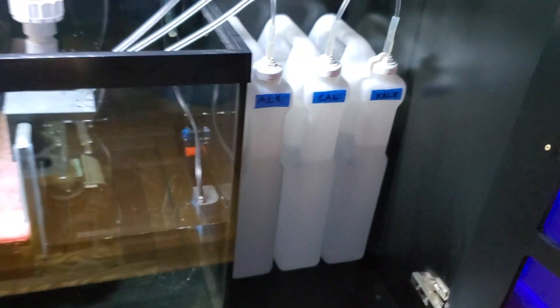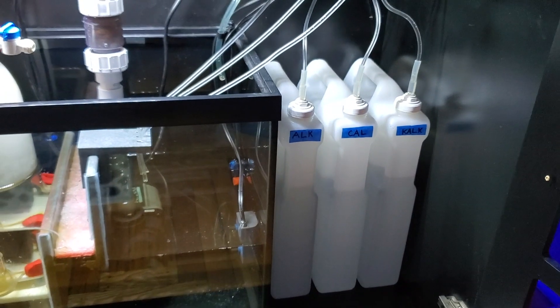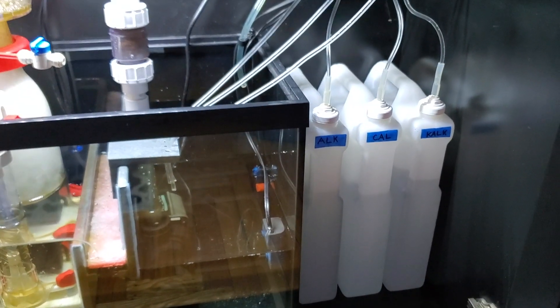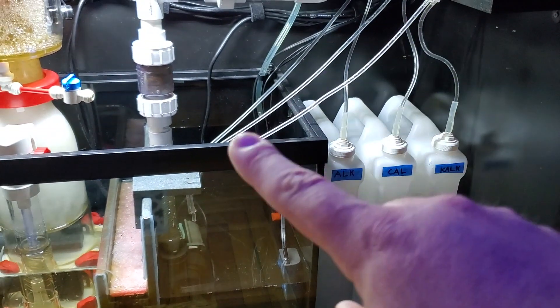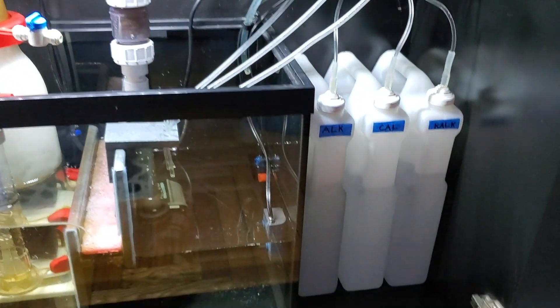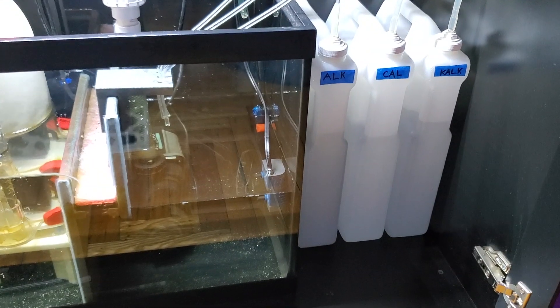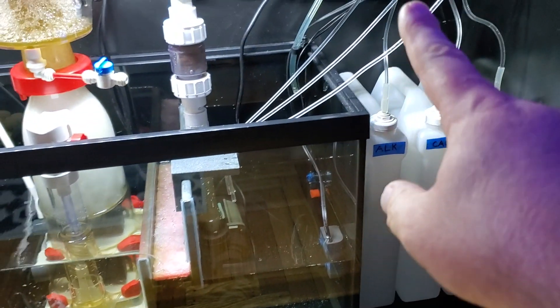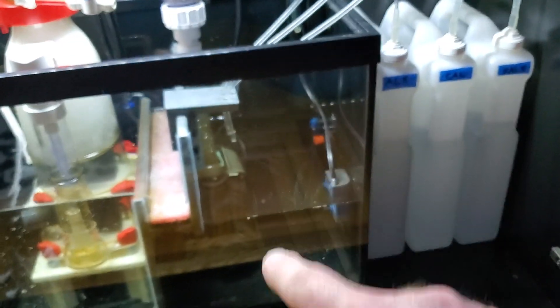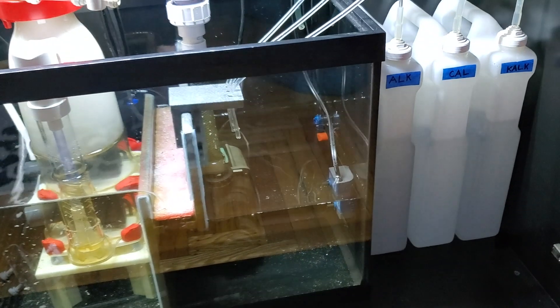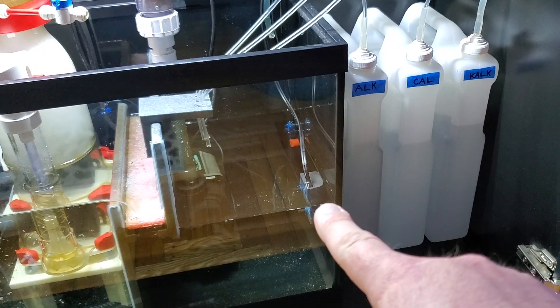So I put this little 100 gallon per hour pump that I had laying around and I actually have that set to my Wi-Fi surge protector. So this little pump turns on a half an hour before any of them starts dosing and turns off a half an hour after it's done dosing. This way the soda ash, the calcium, and the kalkwasser, when it does drop into here it gets good circulation.